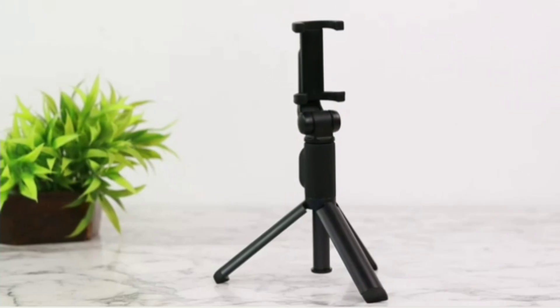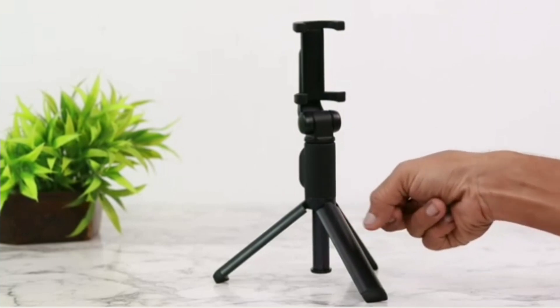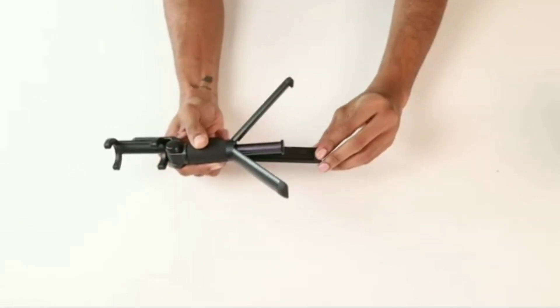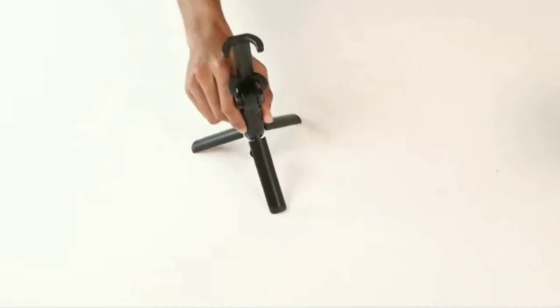Made of durable aluminum material, this selfie stick is unlike any you have used before. It can be converted into a tripod stand by retracting the three legs at the bottom of the selfie stick.